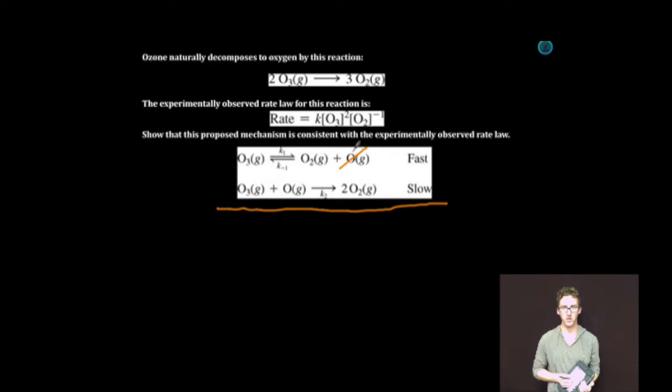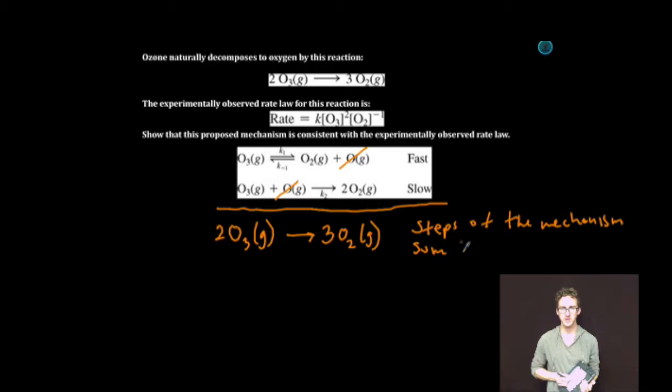Recognize that O is an intermediate. When I sum together my remaining reactants and products, I will get two molecules of ozone gas forming three molecules of oxygen gas. So our first check, steps of the mechanism sum to overall reaction.